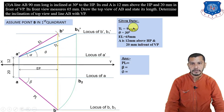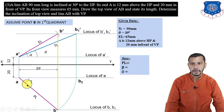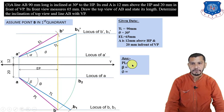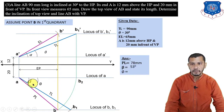Connect B to A to get the plan length at angle beta. Take an arc of 90mm from A on the locus of B to get B1; connect B1 to A to get the true length and the angle phi with the vertical plane. Measure the plan length = 78mm, measure beta = 33°, and measure phi. These are the final answers for Problem 3.